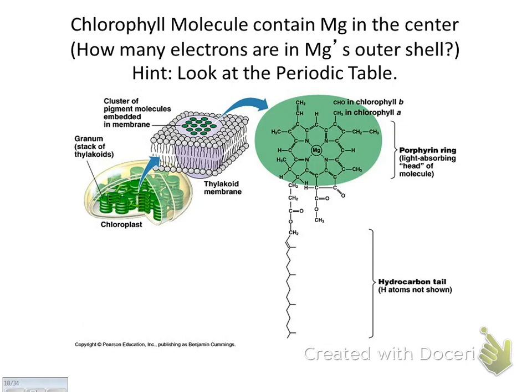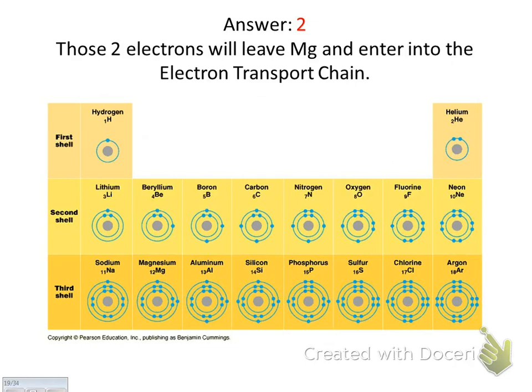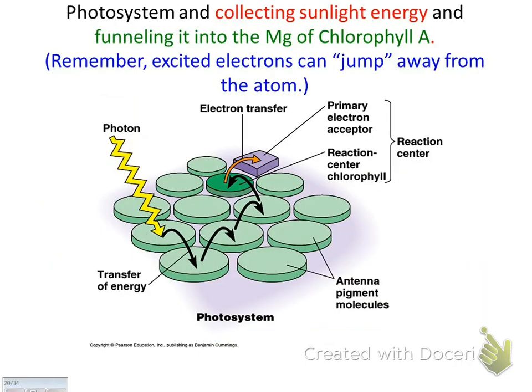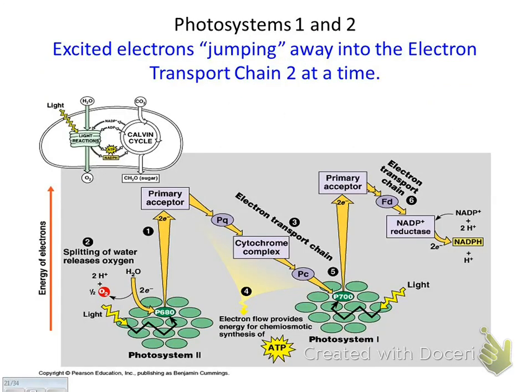Chlorophyll molecules contain magnesium in the center — magnesium has two electrons. Photosystems are inside the thylakoids and they absorb sunlight. There are two different ones: photosystem 1, which absorbs sunlight at about 700 nanometers, and photosystem 2, which absorbs sunlight at about 680 nanometers. There's chlorophyll inside each photosystem.